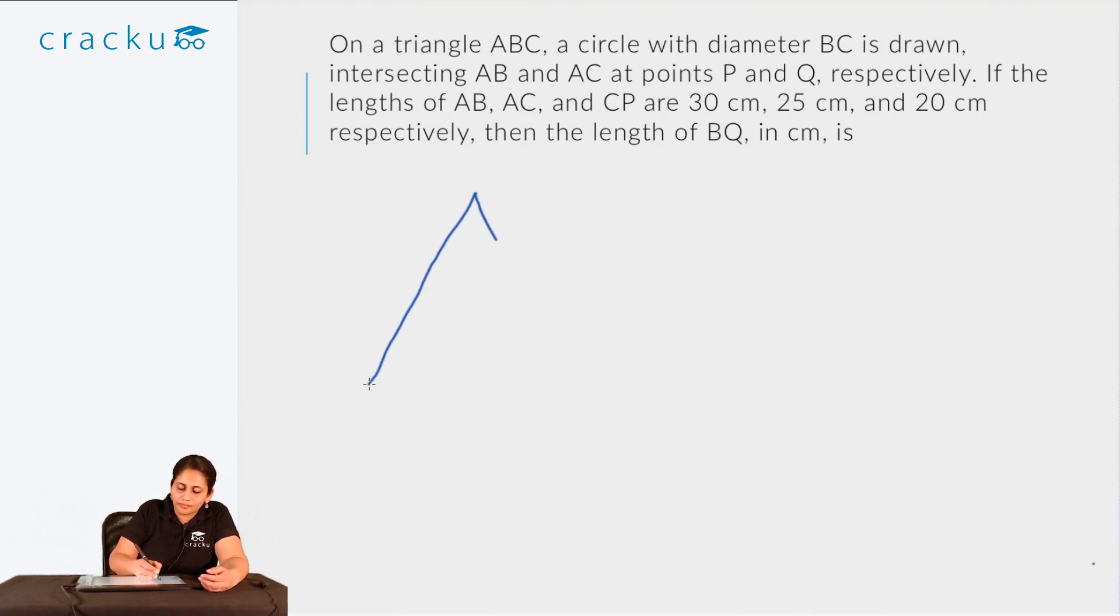So we have something like this. We have ABC and BC is the diameter. So let us draw it out—it intersects AB and AC at P and Q. So since it is intersecting, it must be like this. It is intersecting at P and Q respectively. So this is P.